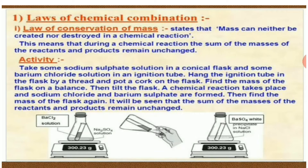When we tilt the flask, both chemicals mix and react together, forming sodium chloride and barium sulphate. When the flask is measured again, the reading is the same: 300.23 grams. So the total mass of the reactants equals the total mass of the products — mass can neither be created nor destroyed during a chemical reaction. This is known as the law of conservation of mass.